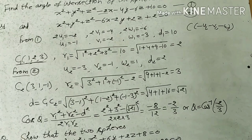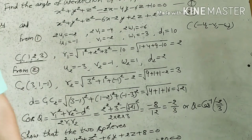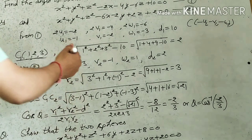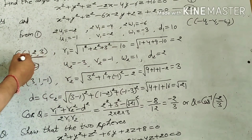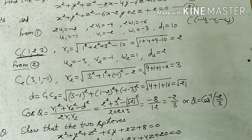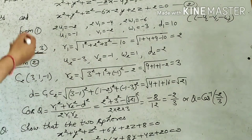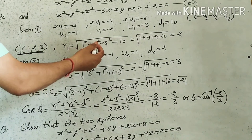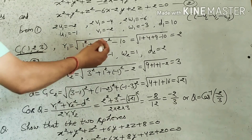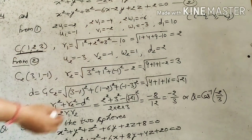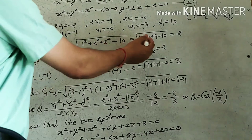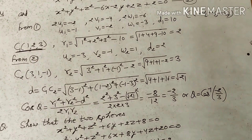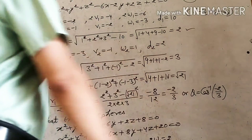Now find the radius of the 1st sphere. The formula is R = √(U² + V² + W² − D). Using the center coordinates: R1 = √(1² + 2² + 3² − 10) = √(1 + 4 + 9 − 10) = √4 = 2. So the radius of the 1st sphere is 2.